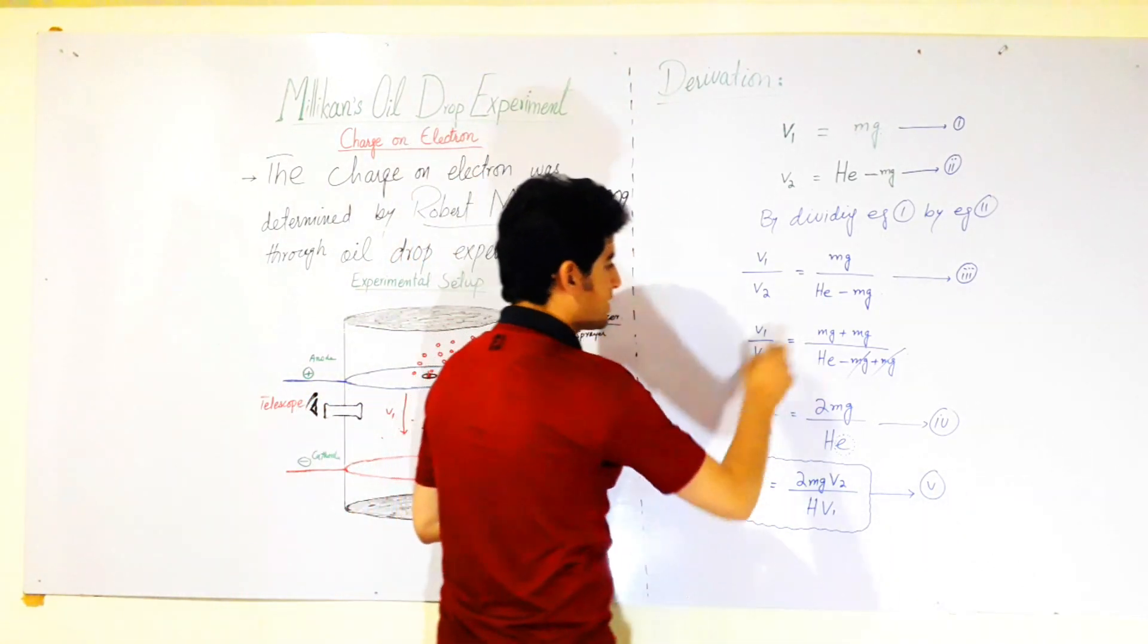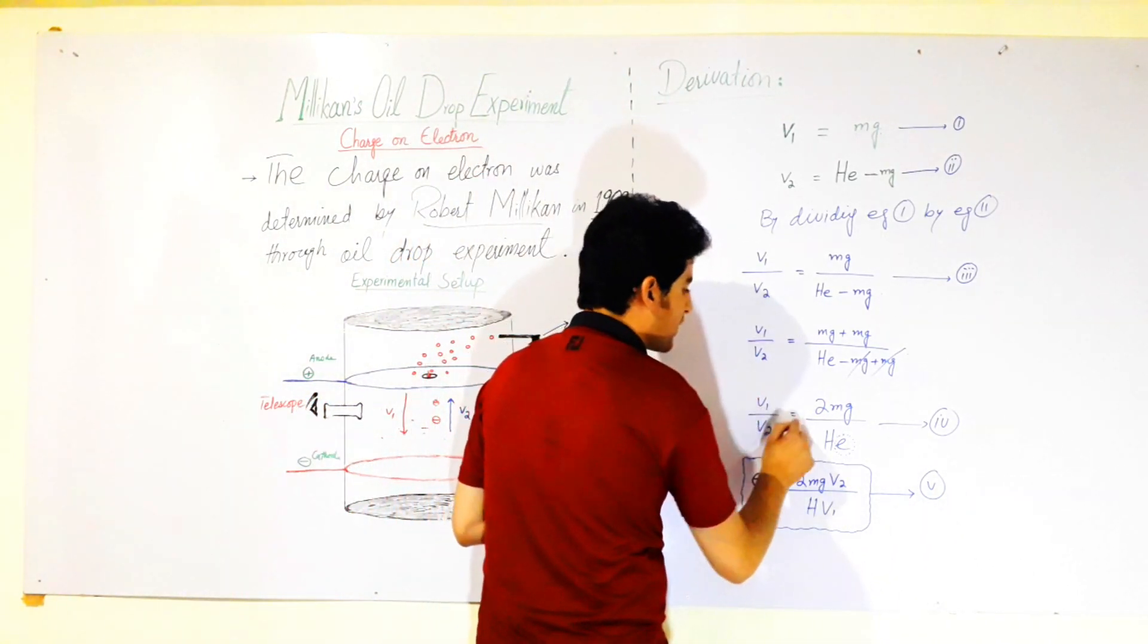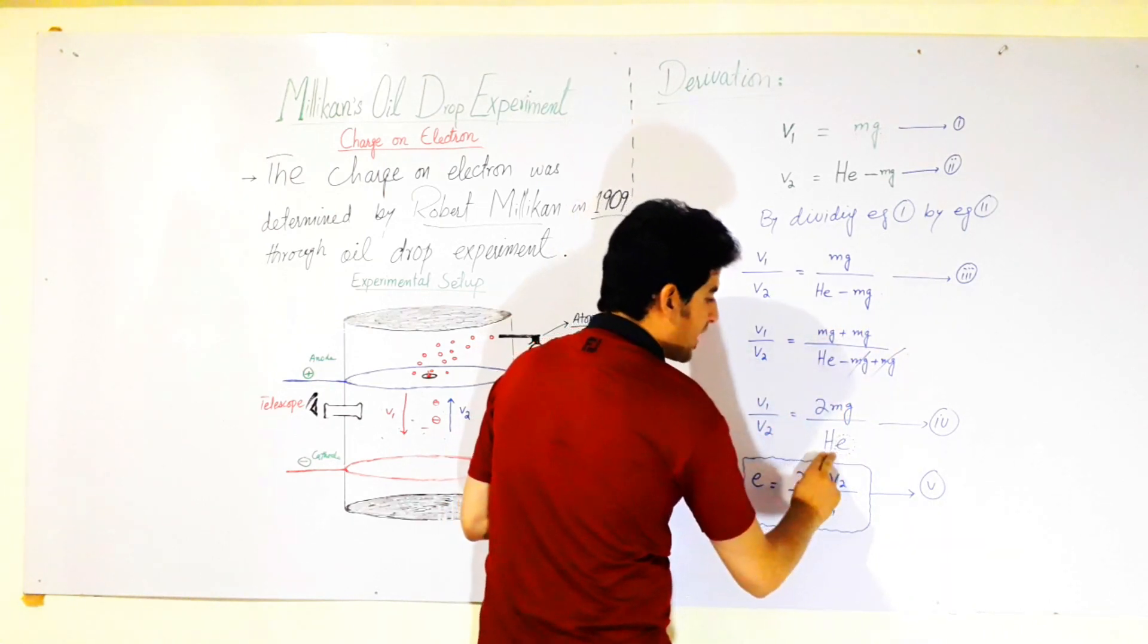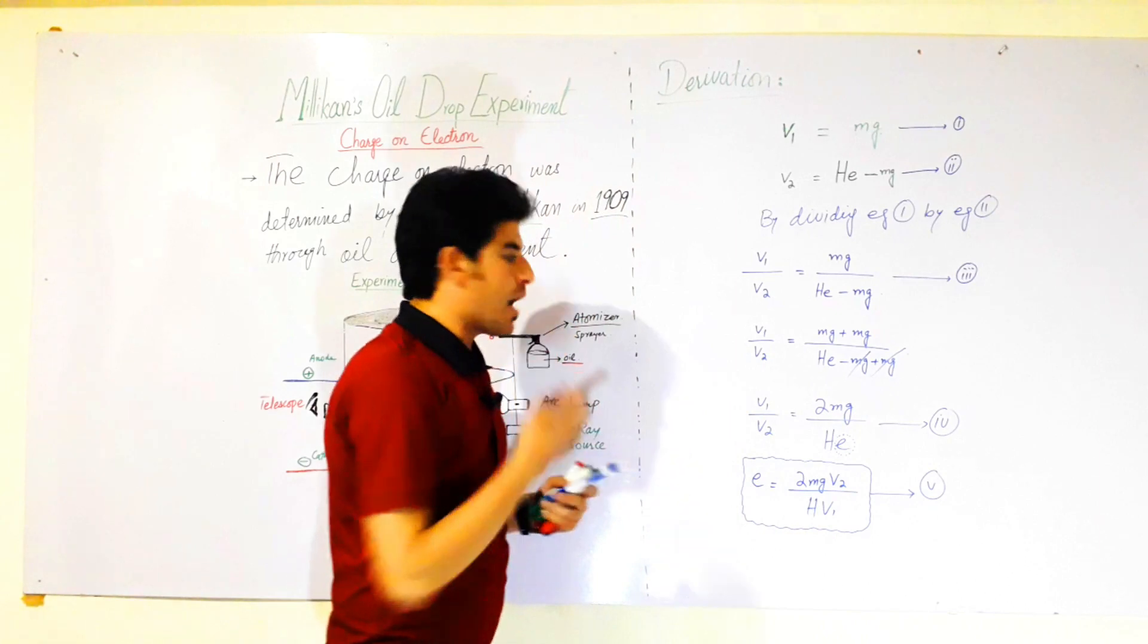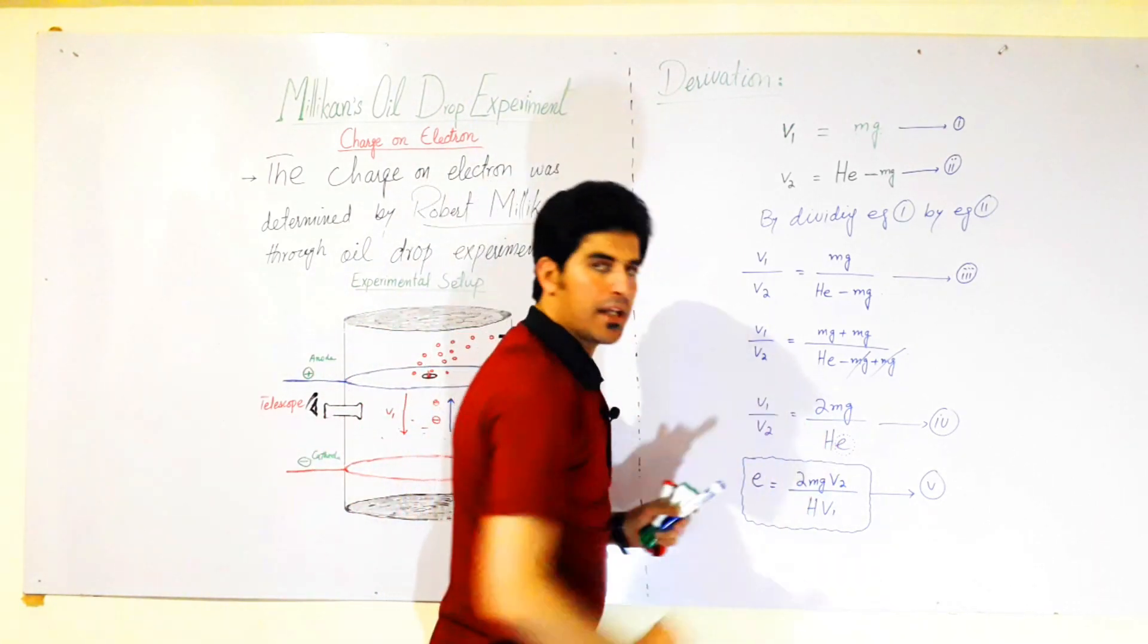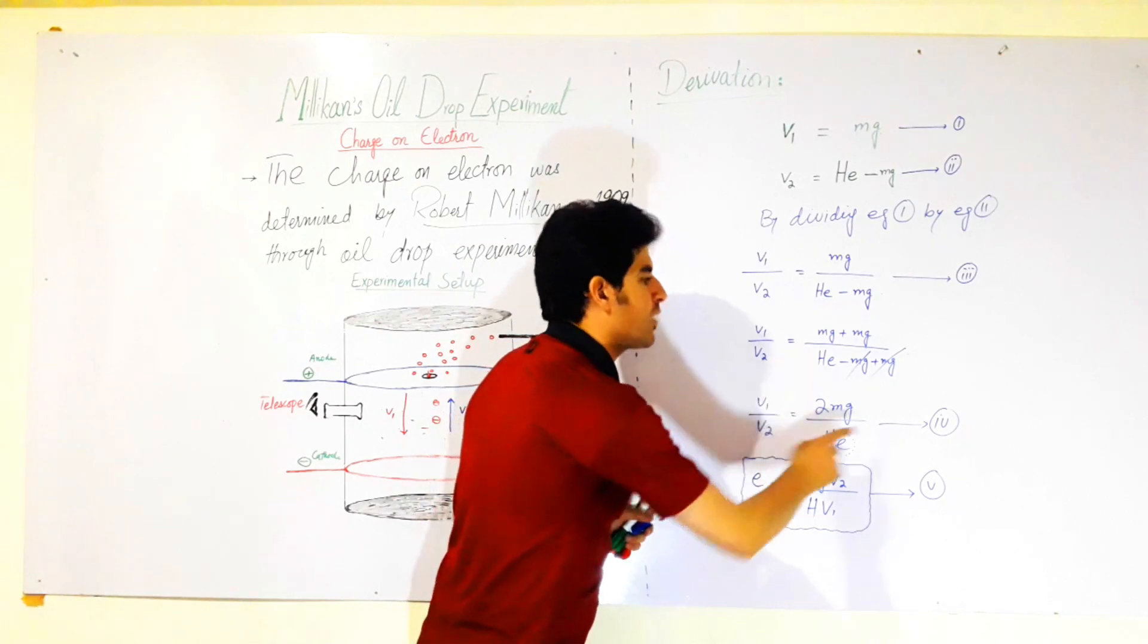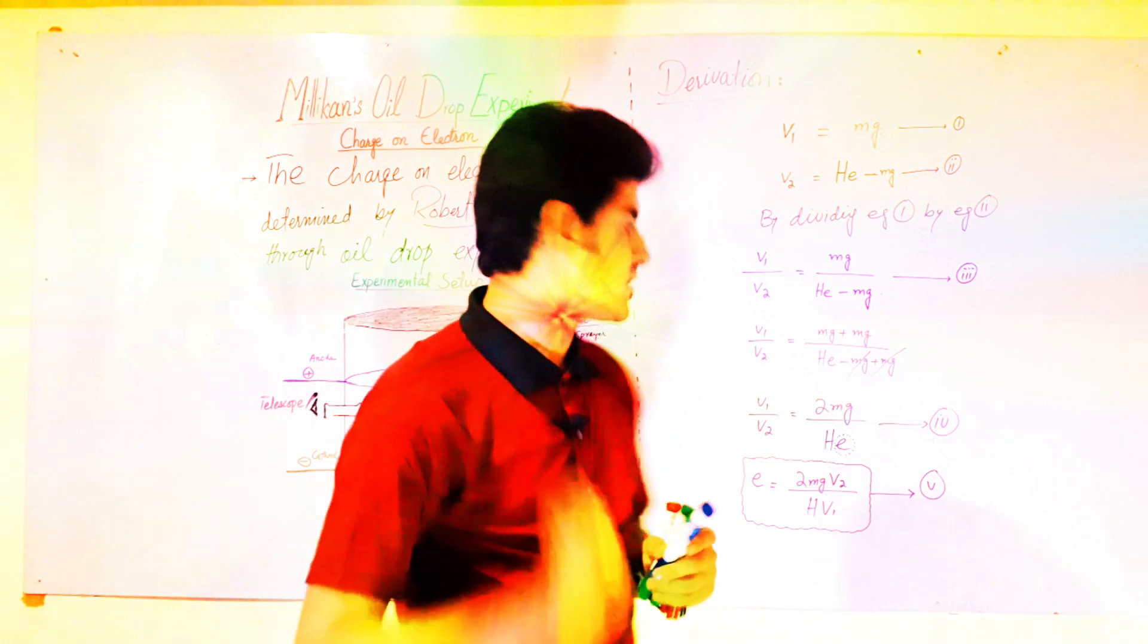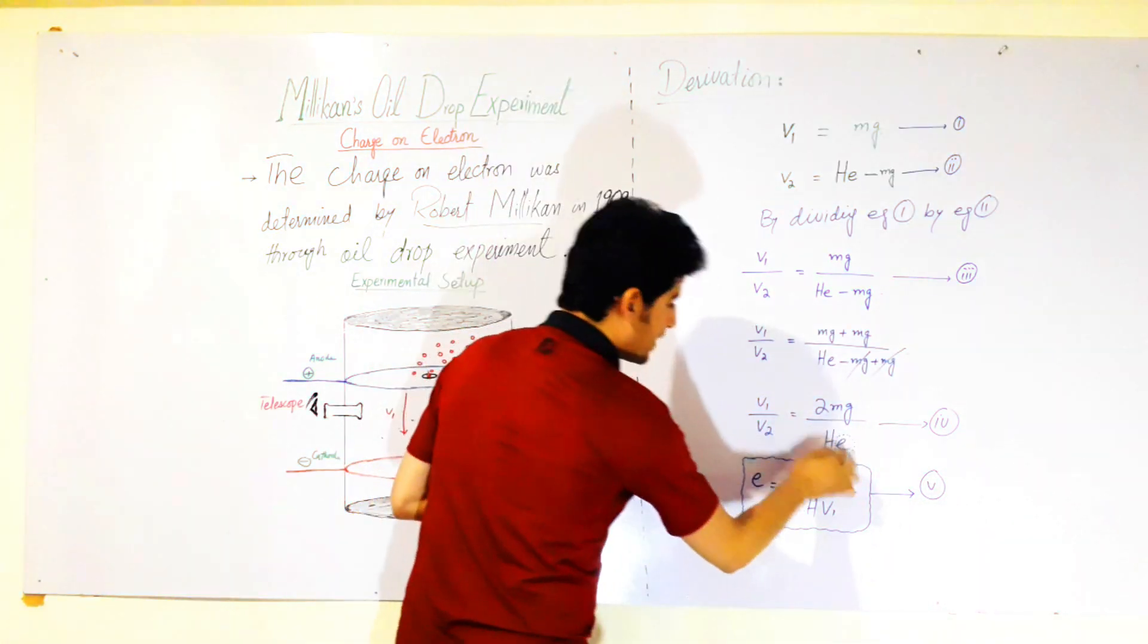So when we cancel, we have v1 divided by v2 is equal to 2mg divided by qE. Now we rearrange to get the charge. This is equation number four.